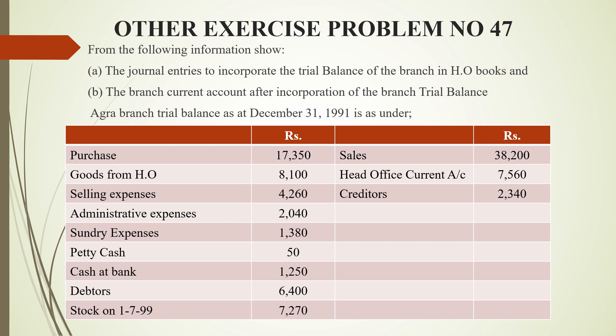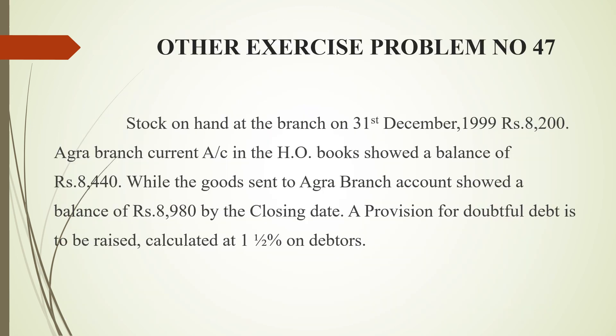The adjustments given are: closing stock is 8,200 rupees; the Agra branch current account in the head office book showed an opening balance of 8,440 rupees; and the goods sent to Agra branch account showed a balance of 8,980 rupees by the closing date, which is the closing balance of the Agra branch current account.